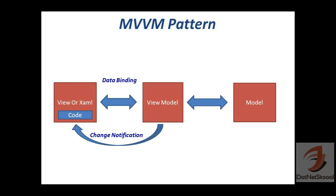Here are the blocks that explain the MVVM pattern. The ViewModel sits between the Model and the View. In the View or XAML block, there is a small block called 'code' — this means the view should contain no or very minimal code behind. You won't write any button click, grid event, or combo box event in the view.